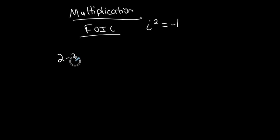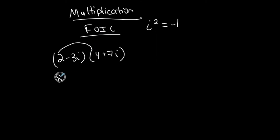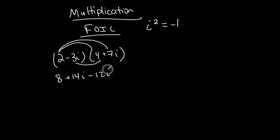Let's say we have (2 - 3i) times (4 + 7i) — the product of these two complex numbers. Because they're both in standard form with two terms each, I can use the FOIL method. First: 2 times 4 is 8. Outer: 2 times 7i is 14i. Inner: negative 3i times 4 is negative 12i. Last: negative 3i times 7i is negative 21i squared.